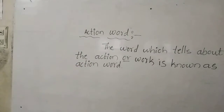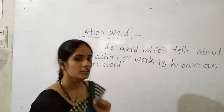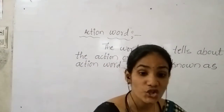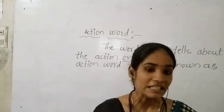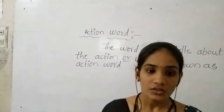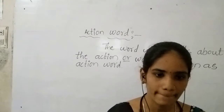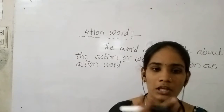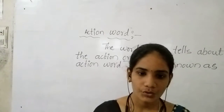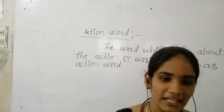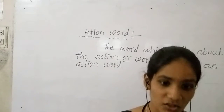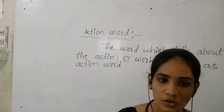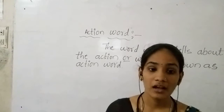Students, what is action word? Action word is a word — the word which tells us about the action or verb. Work is known as action word. For example, now I am teaching. Teaching is telling us about the action, about the work. Now what you are doing? You are listening, you are attending the class. The word 'attending' is telling us what exact work is going on.